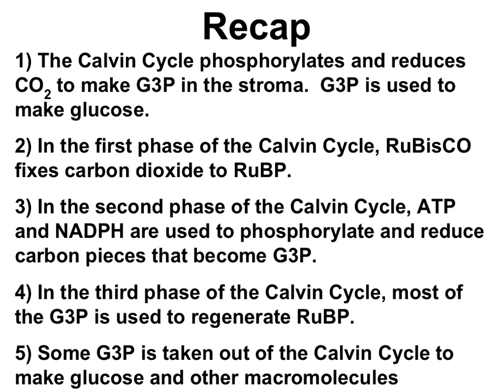Let's recap this video. The Calvin Cycle phosphorylates and reduces carbon dioxide to make G3P in the stroma of chloroplasts. G3P is the magic molecule used to make glucose. The Calvin Cycle can be broken into three phases. Phase one is carbon fixation, where Rubisco fixes carbon dioxide to RuBP. Phase two uses ATP and NADPH to phosphorylate and reduce carbon pieces that become G3P. In phase three, most of the G3P is used to regenerate RuBP, but some G3P can be taken out to make glucose and other macromolecules.